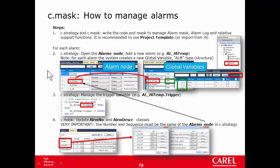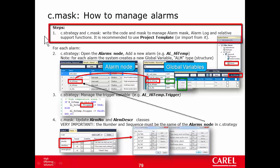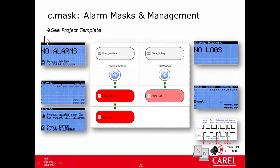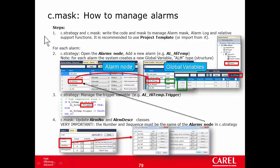As usual, there is a slide that summarizes the steps to follow to manage the alarms. Step one: in C-Strategy and in C-Mask, we have to write the code and mask to manage the alarm mask, the locks, and all the support functions. The suggestion is to start from the project template because it already has these five masks inside and everything else. The chiller alarms project is based on the project template, so step one is done.